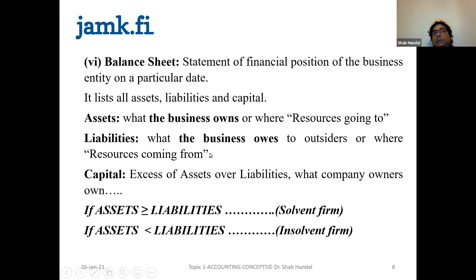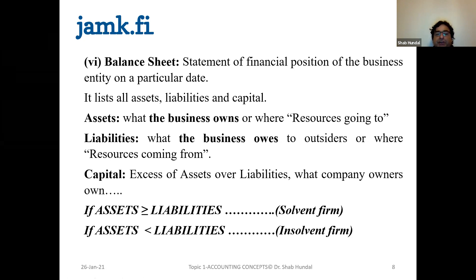As a rule of thumb, assets show where money goes to, or what the business owns. Liabilities are where the resources or money come from, or what the business owes to others. At any point of time, not even one exception, the assets must be exceeding the liabilities.